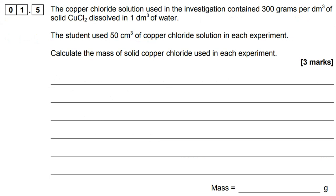On to 1.5, the copper chloride solution used in the investigation contained 300 grams per decimetre cubed of solid copper chloride dissolved in 1 decimetre cubed of water. The student only used 50 cm cubed, so how much solid copper chloride was used in each experiment? First of all, we need to consider what 50 centimetres cubed is in decimetres cubed, because we're working in grams per decimetre cubed in the data provided. We do that by dividing 50 by 1,000 - 0.05 dm cubed.